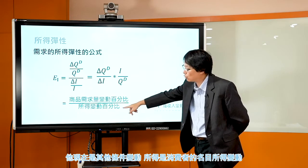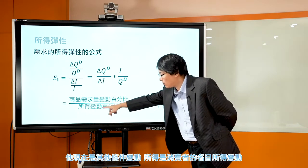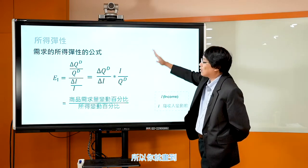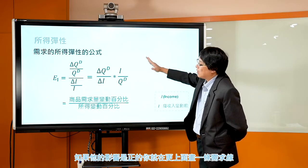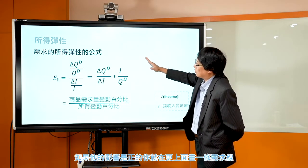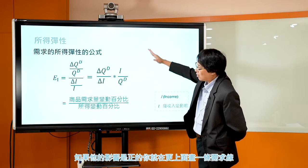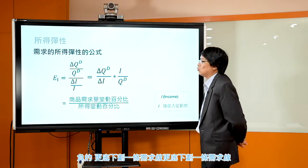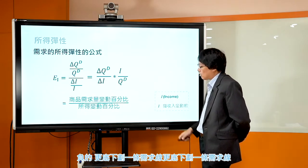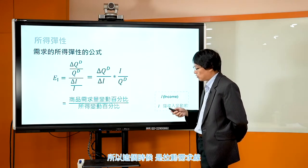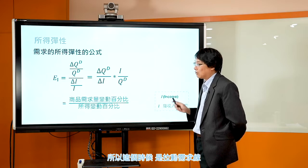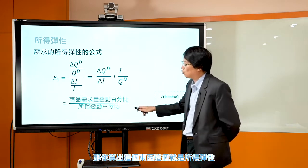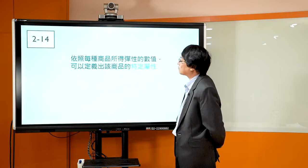当所得变动的时候，对需求线的影响是左右拉动需求线。因为在需求线的图上呈现的是价格跟数量的关系，假设其他条件不变，所得变动属于其他条件变动，所以是拉动需求线。如果影响是正的，需求线往外拉；负的则往内拉。